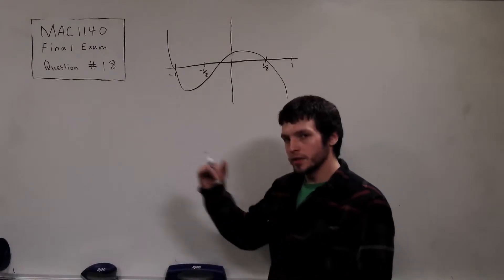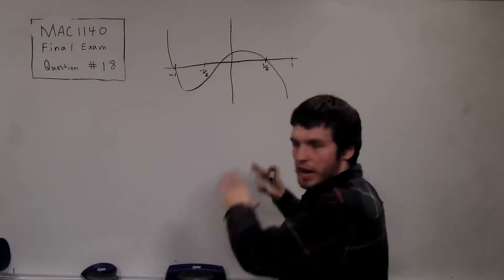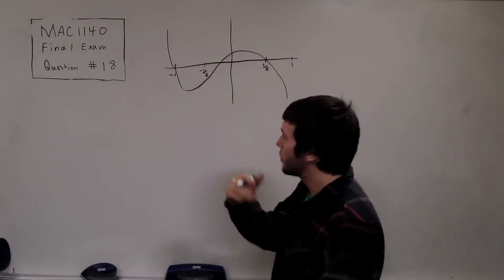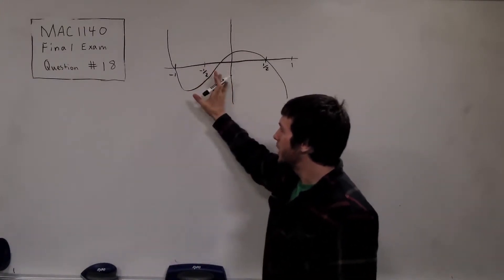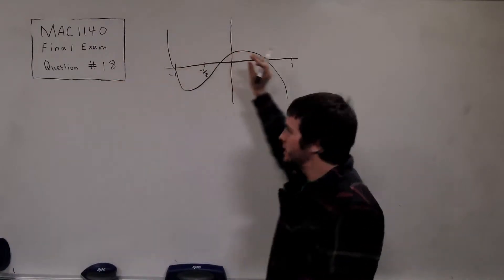So if you know that your graph is that of a polynomial, you can look at the end behavior and tell something very important about the polynomial. So when I say end behavior, I mean, what is the function doing at the very left-hand side and the very right-hand side?